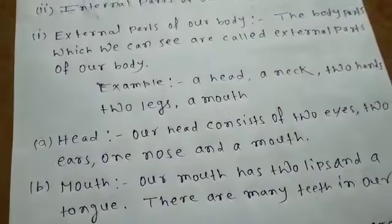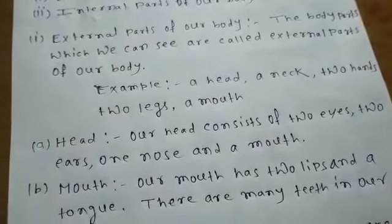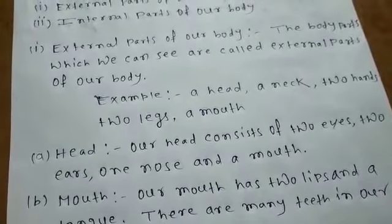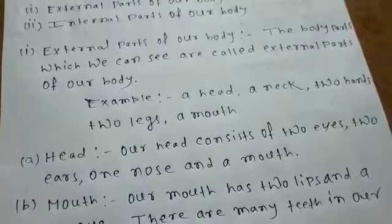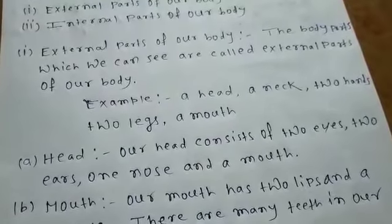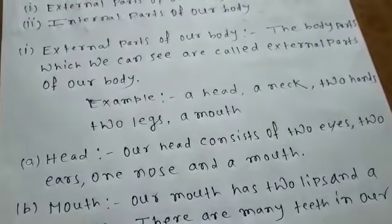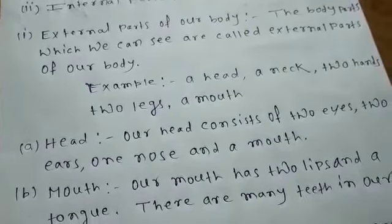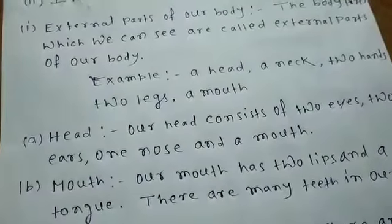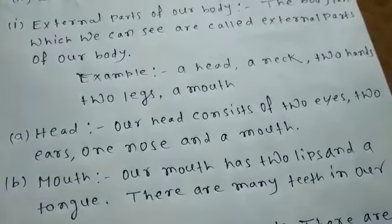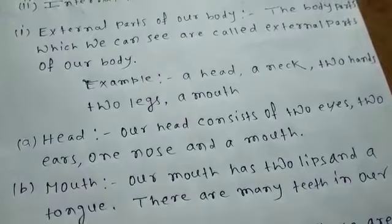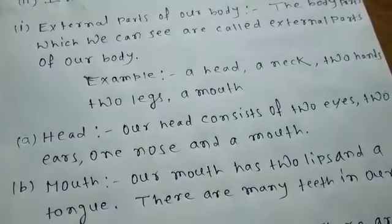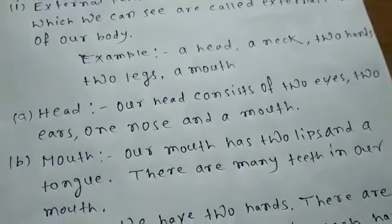Our head consists of two eyes, two ears, one nose, and a mouth. Our mouth has two lips and a tongue. There are many teeth in our mouth.